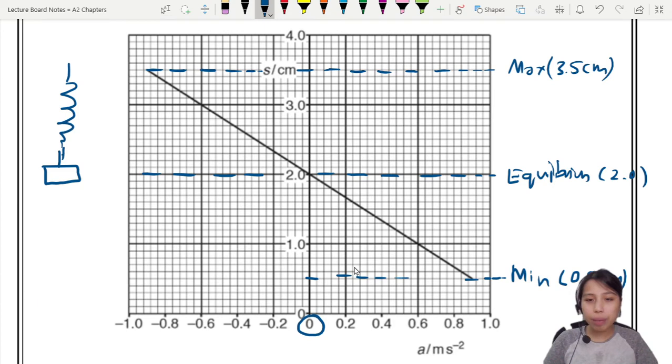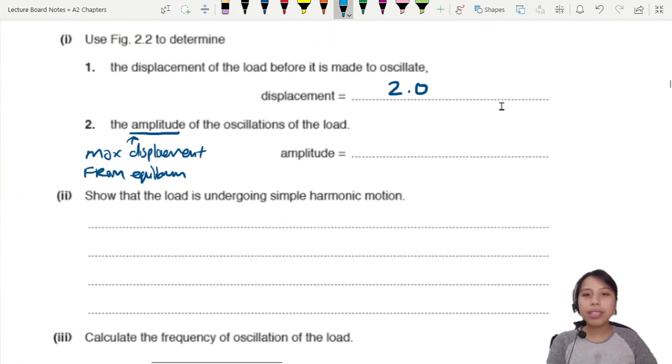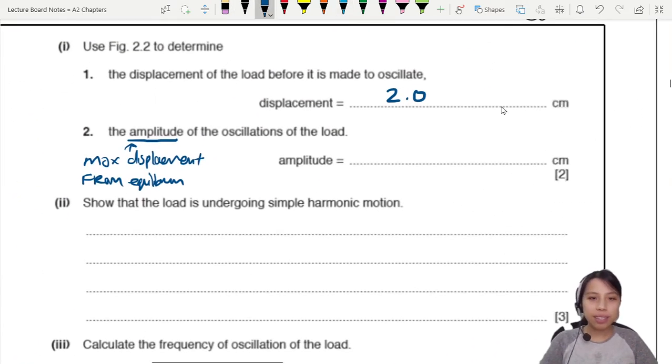So what's the displacement? Please don't forget, displacement is from equilibrium. Amplitude. So we're going to take 3.5 minus 2.0. This one, a small little trap here. Please don't forget the amplitude. So let's write what is 3.5 minus 2.0. That would be 1.5 cm.